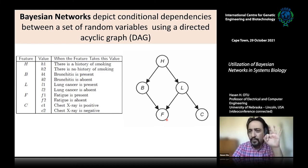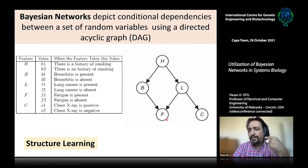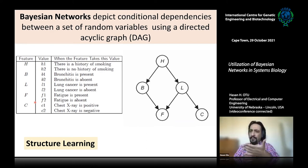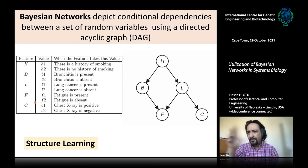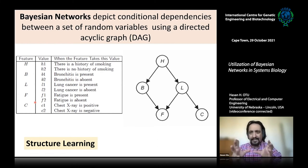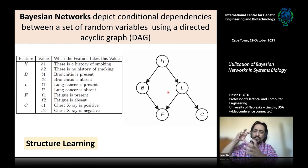There are three main things we can do with Bayesian networks. The first is structured learning: collect data for five random variables from 50,000 patients — an Excel sheet with columns H, B, L, F, C and rows for patients — feed it to the algorithm, and it outputs the network structure. The second is instantiation: after learning the network and its parameter distributions from data, we set values of a subset of nodes and ask the probability of remaining nodes.